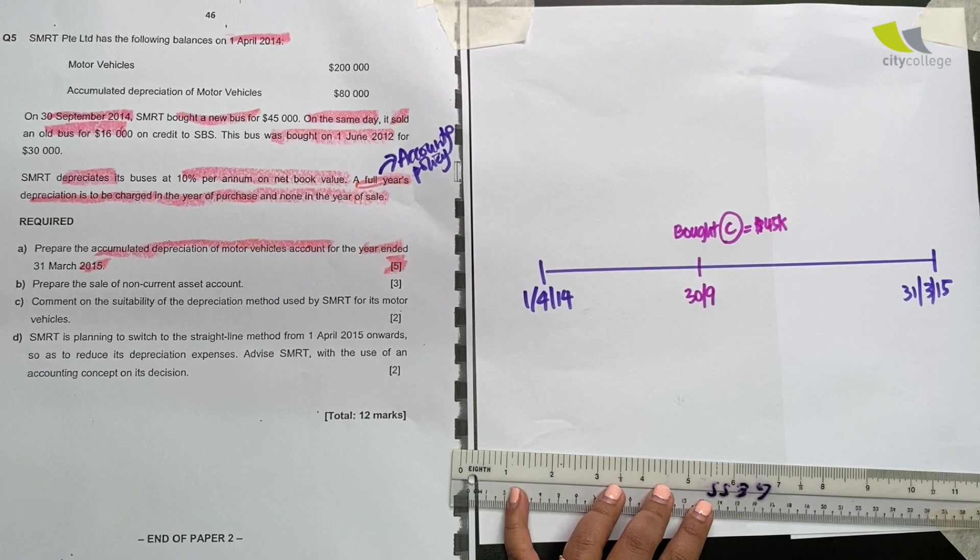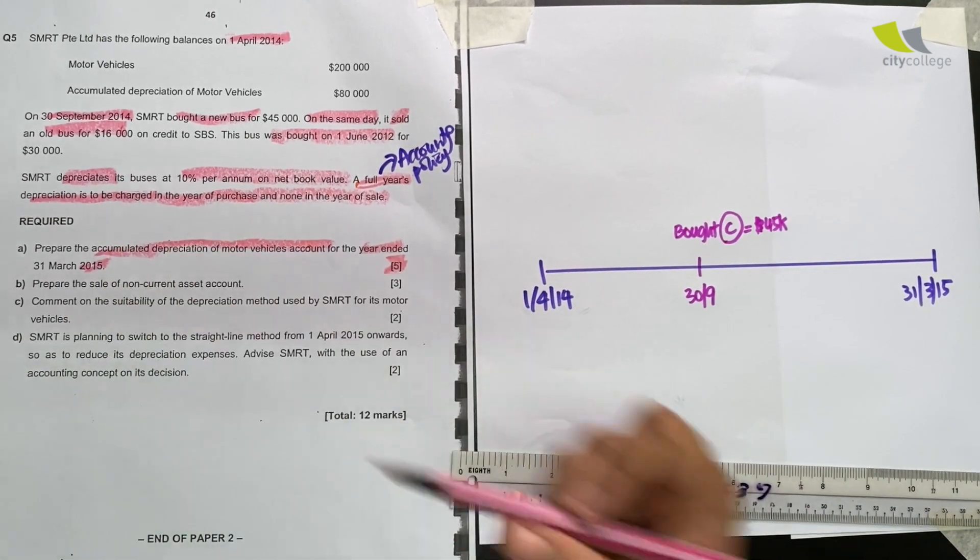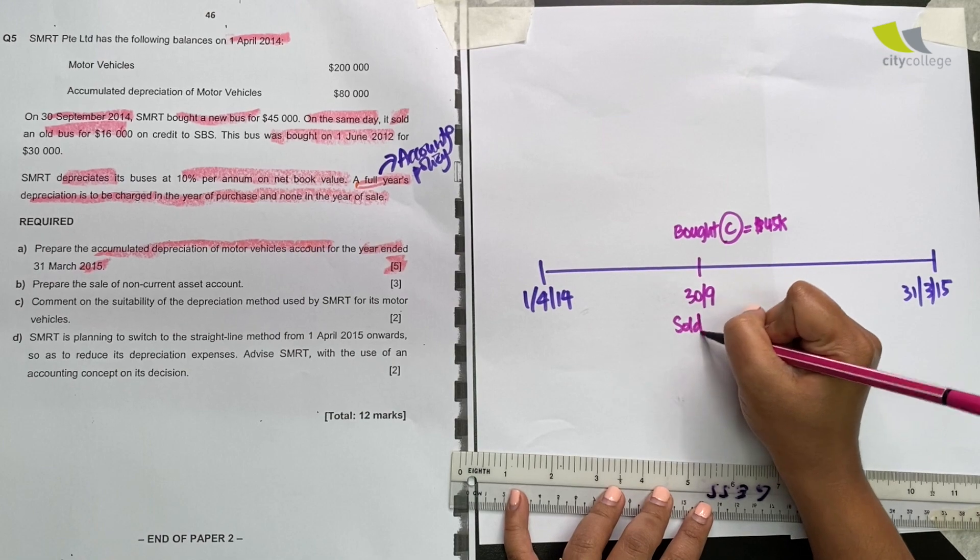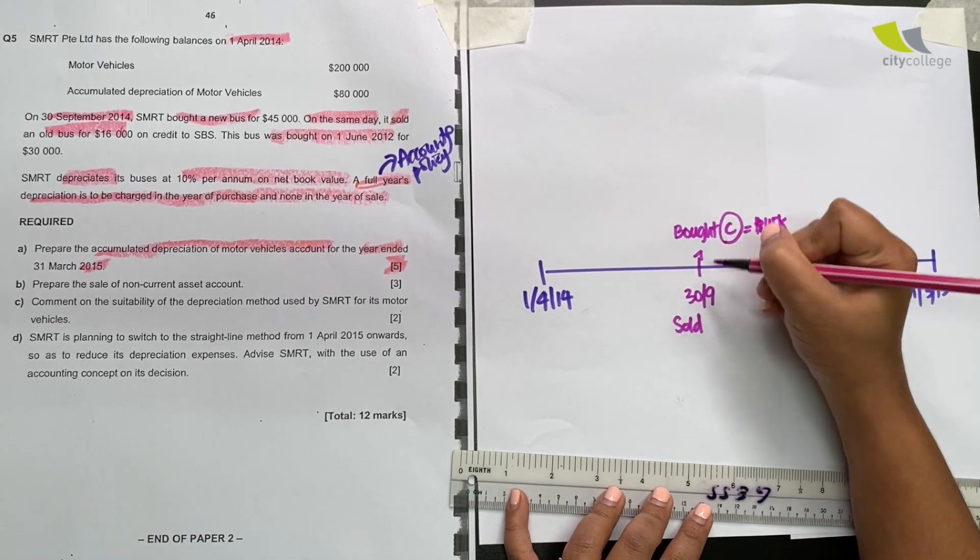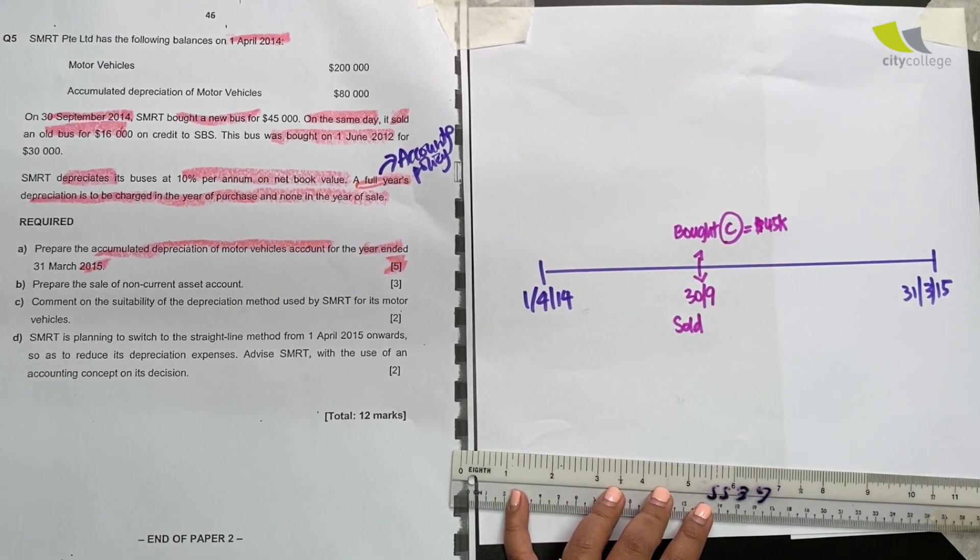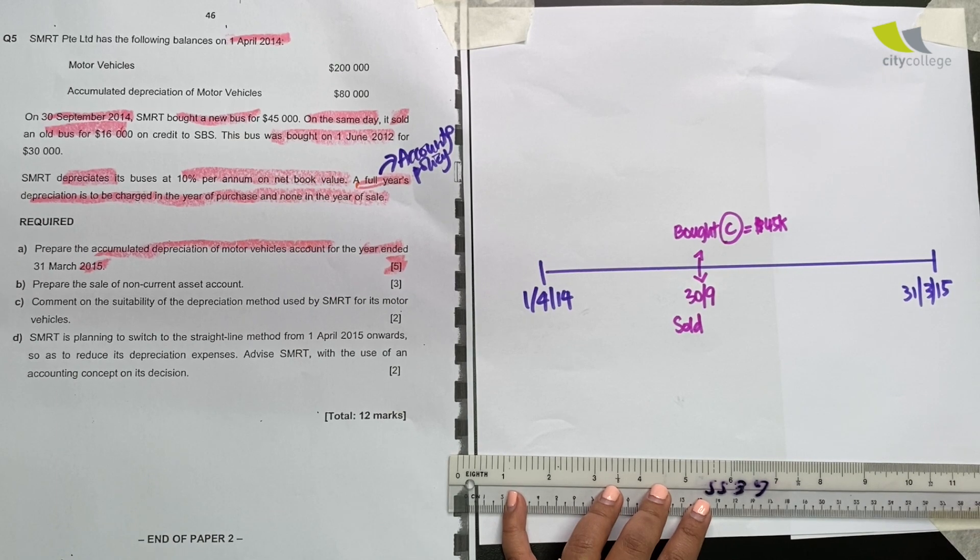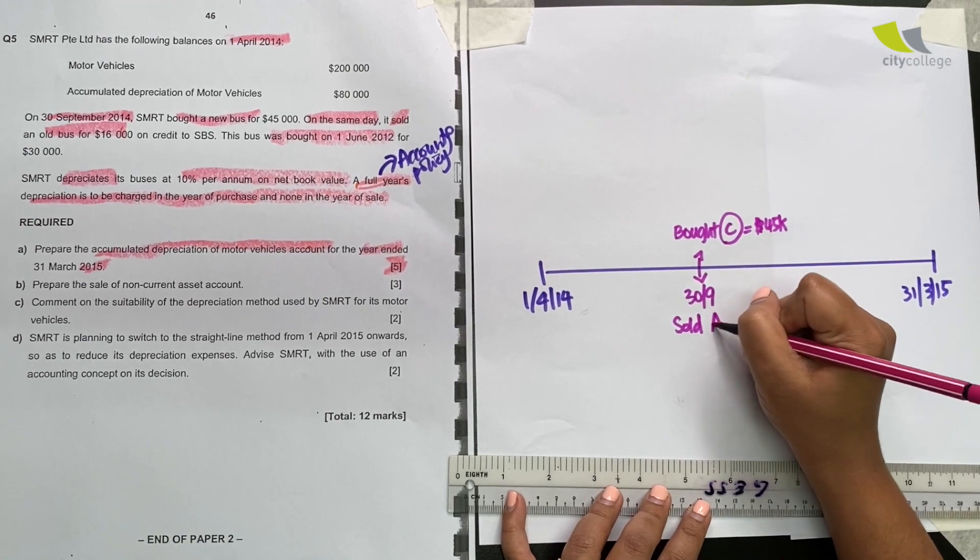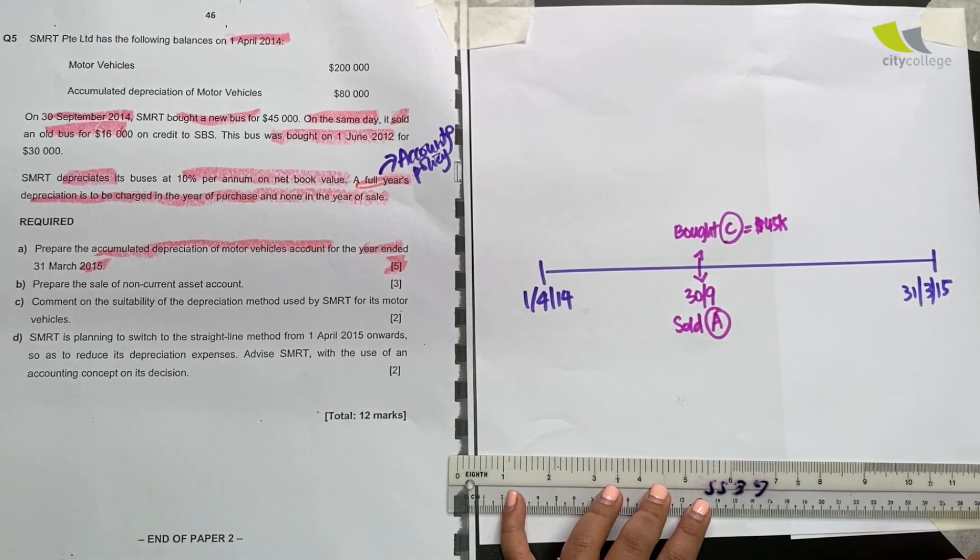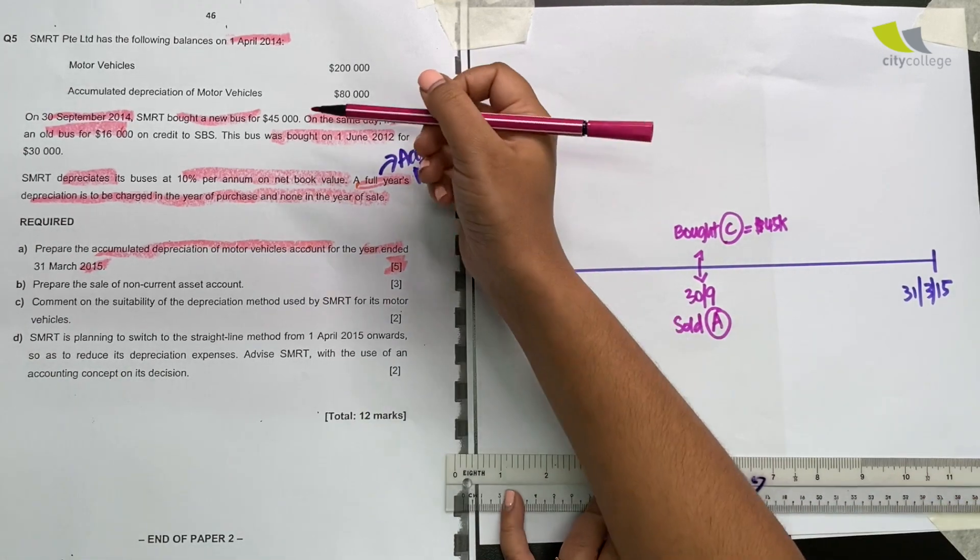On the same day, it sold an old bus for $16,000. So let's write the sold just right below. Both events are happening on the same day, 30th September. It sells an old bus on credit to SBS. Now let me name that old bus A. An old bus. Let me name that A. Read on.